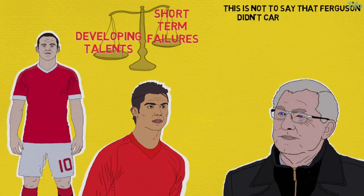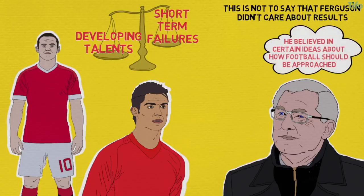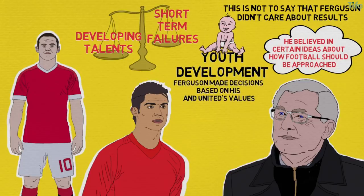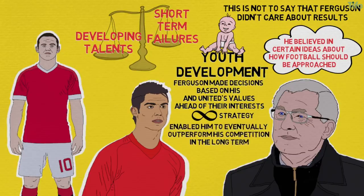This is not to say that Ferguson didn't care about results — it's simply that he believed in certain ideas about how football should be approached, among which was youth development. Ferguson made decisions based on his and Manchester United's values ahead of their interests, and this type of infinite strategy enabled him to eventually outperform his competition in the long term.